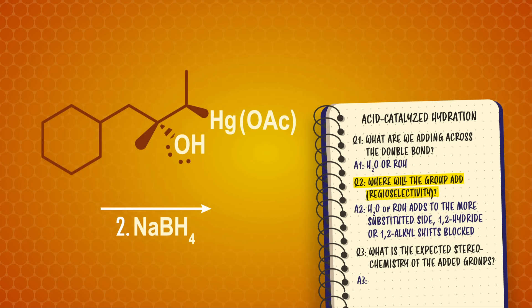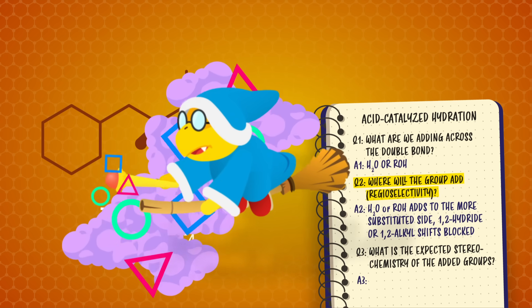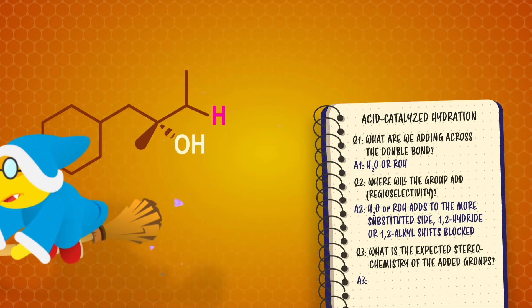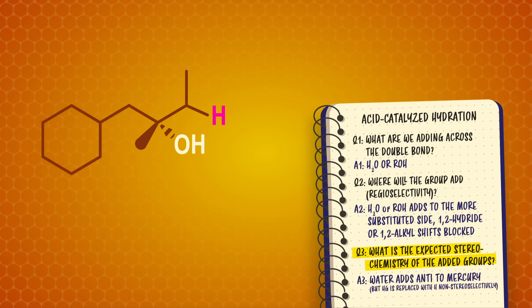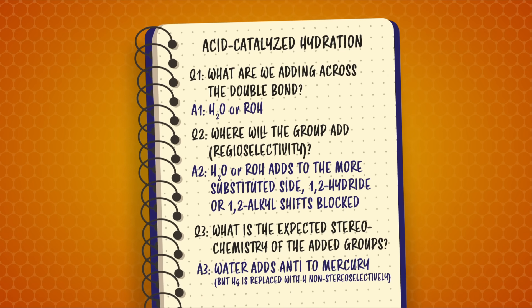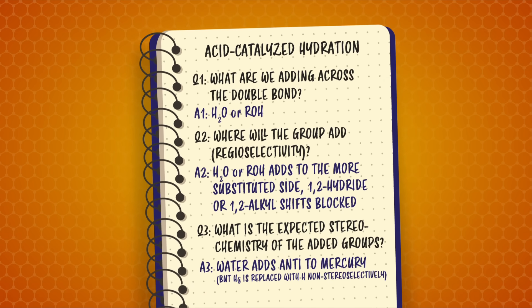We're actually going to skip the details here because it's a metal reaction mechanism which gets into inorganic chemistry. Basically, all we need to know for this series is that a hydrogen atom replaces the mercury, and we get our alcohol. And to answer question number three, the mercurinium ion blocks the side of the double bond, so we have anti-addition of the alcohol. The really important piece to remember here is that we get Markovnikov addition and no rearrangement products. So to sum up our combo key to oxymercuration, here's another note card.